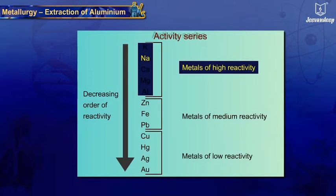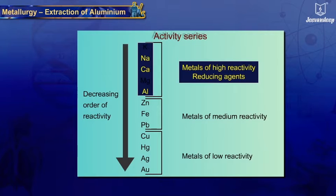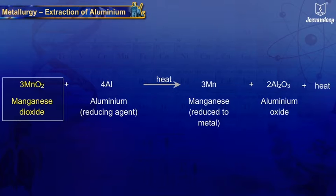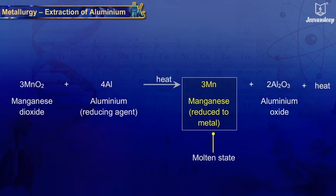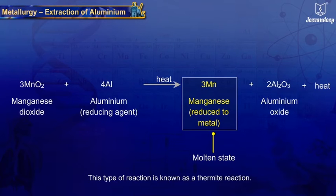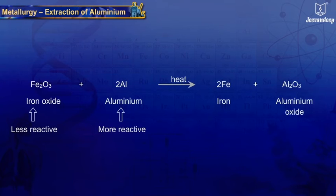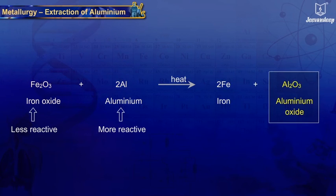Highly reactive metals like sodium, calcium, aluminium, etc. are also used as reducing agents, as they can displace metals of lower reactivity from their compounds. For example, manganese dioxide is heated with aluminium powder, reducing it to metallic form. This reduction reaction evolves a large amount of heat and the metal is produced in the molten state – this type of reaction is known as a thermite reaction. Another example is the reaction of iron oxide with aluminium to give iron and aluminium oxide.